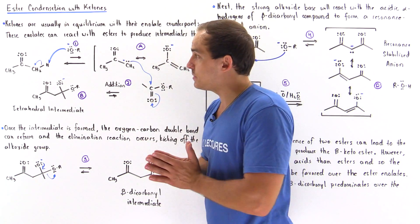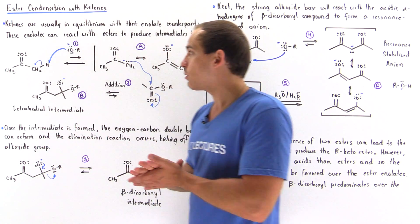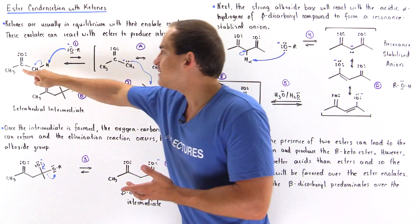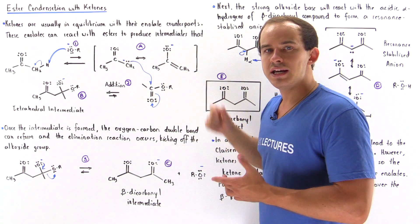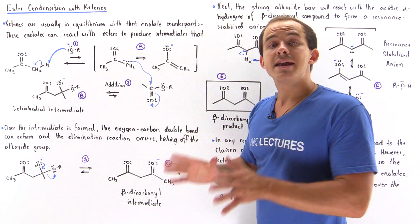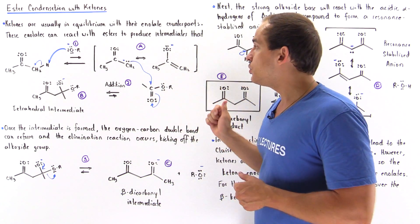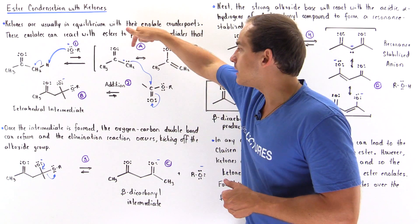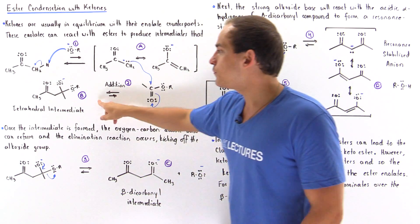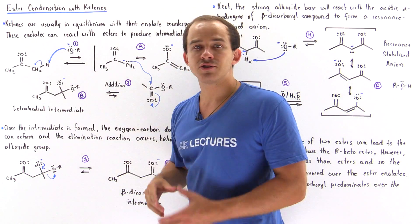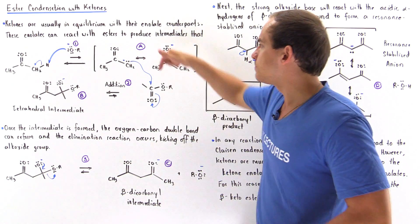Because we have the more acidic ketone present in our mixture, it's the ketone that reacts to form our ketone enolate. And it's the ketone enolate that will act as our nucleophile in the second addition step with our ester, to form the tetrahedral intermediate we call intermediate B.